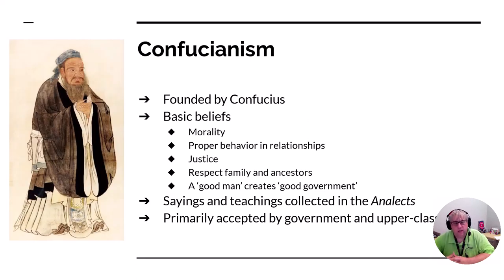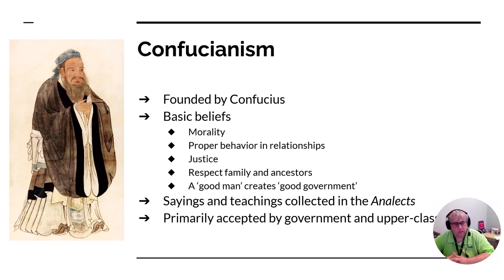Then we have Confucius, who was actually a teacher, and all of his teachings and sayings are collected in a book called the Analects. Confucius based his philosophy around morality and operating correctly in your relationships with others — with family members, elders, ancestors, and the government. Very famously, Confucius says a good man creates good government. This becomes the primary and preferred belief of the Chinese government because it convinces people to do what the government wants. The emperor is seen as the father of the land, and if the emperor says to do something, you're expected to do it.